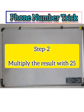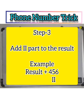Step 2: Multiply the result with 25. Step 3: Add the second part, that is the next three digits, to the result.